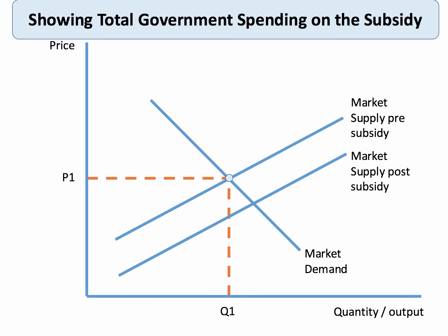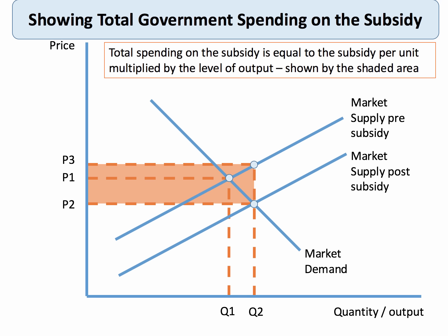The second thing to show is how much total government spending there is on the subsidy. With the original price P1 and the new supply curve in place, the market price falls to P2 and quantity expands to Q2. The producer receives the price P2 plus the subsidy. Drawing vertically from Q2 to the original supply curve and across to the y-axis gives price P3. The subsidy per unit is P3 minus P2, multiplied by output Q2, giving total government spending on the subsidy shown by the shaded area.